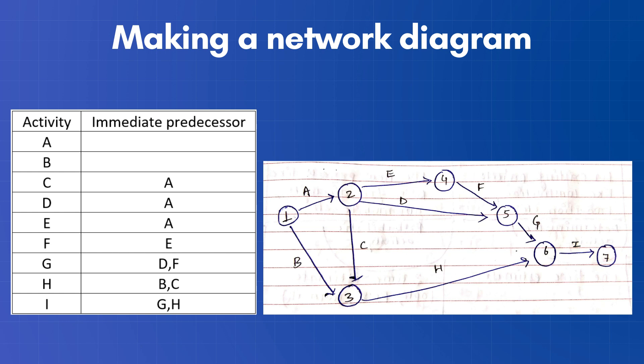Following the same procedure for the rest of the table, we can now have all the corresponding activities and events in the network. So this is how our final network will come out.